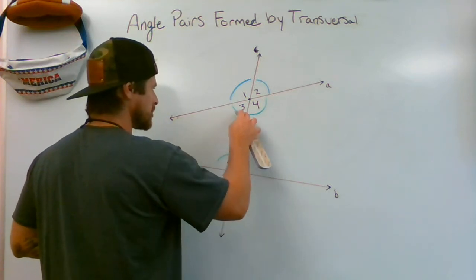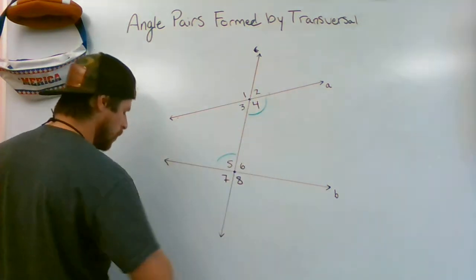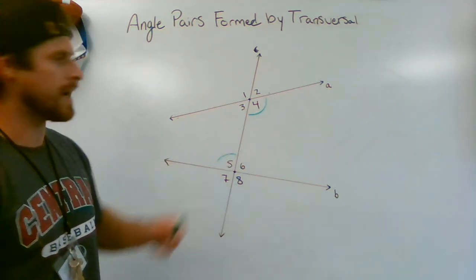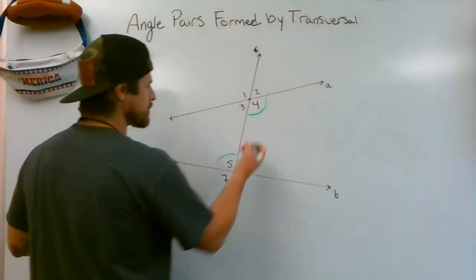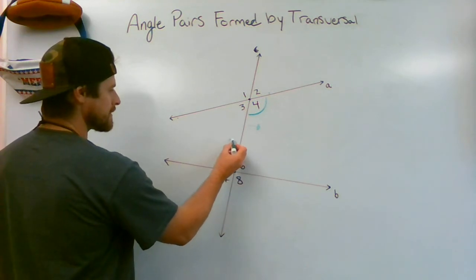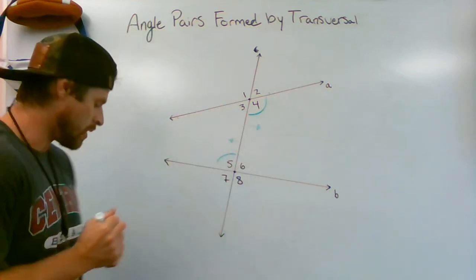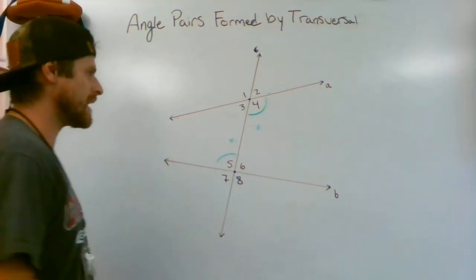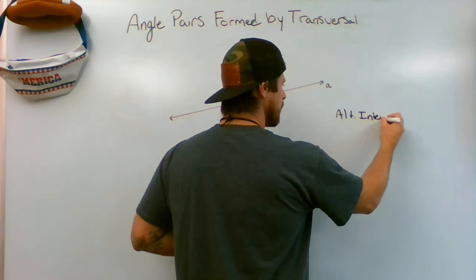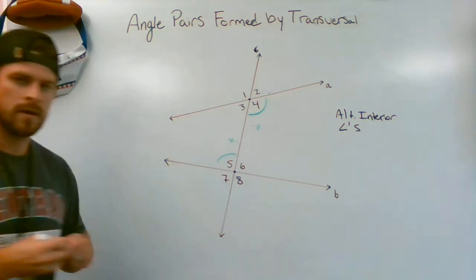Right here, erasing everything except for one pair of alternate interior angles: four and five. Four and five are alternate interior angles because four is on the right side of the transversal while five is on the left side — it is alternating from right to left, and they are in the interior. So that's one type of pair: alternate interior angles.